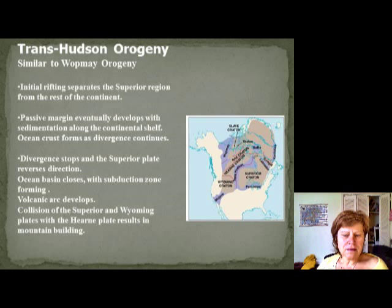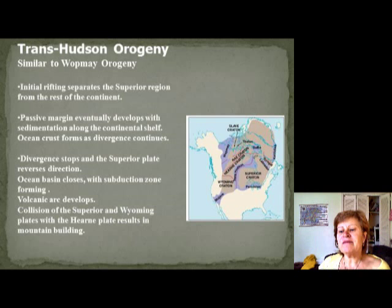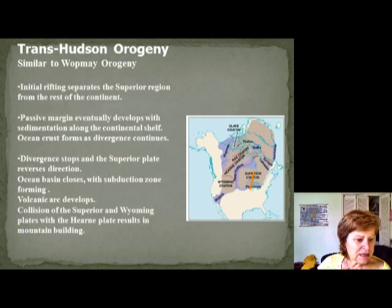The other big orogeny is the Trans-Hudson, which is very similar to the Wopmay. It was in the Superior region. We have evidence for initial rifting, then it became a passive margin with passive margin sediments. Then divergence stopped and reversed direction, producing subduction zone volcanic arcs. Then we have evidence for collision between the Superior and the Wyoming craton.